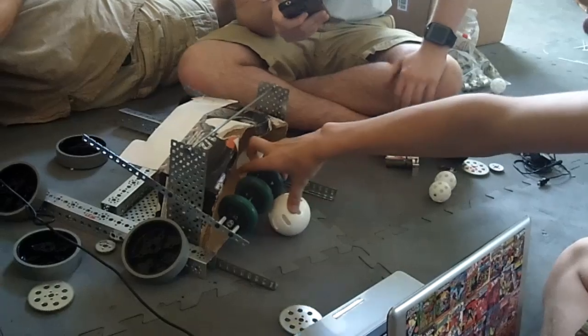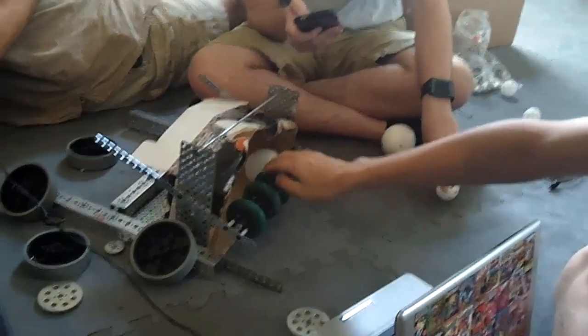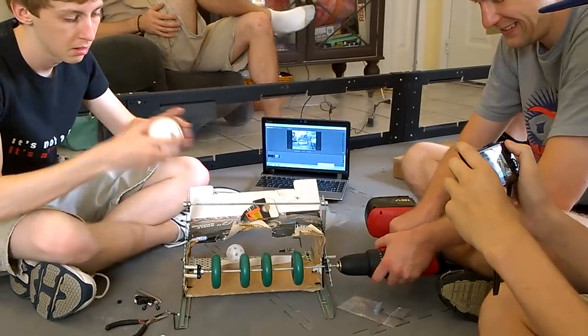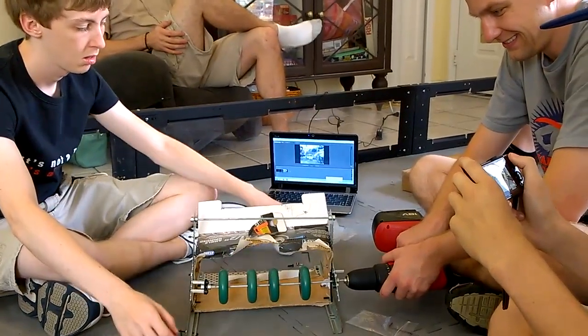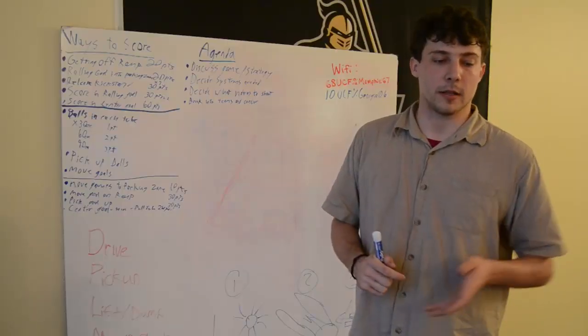Then the second one we built was a string bar intake and what happened is you can pick up the big balls and the little balls all at the same time. However, in the little ball department it didn't work quite as well and when it came to expelling the balls it didn't work the best.